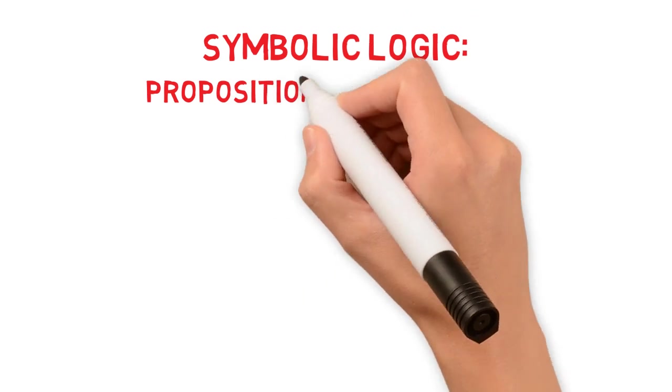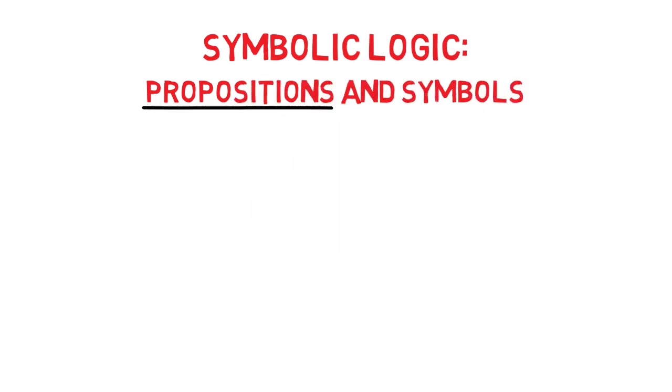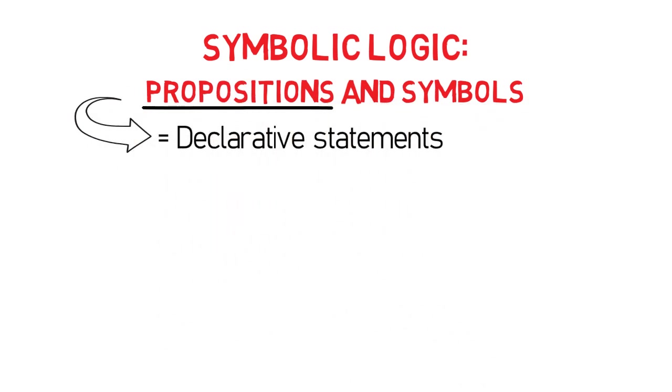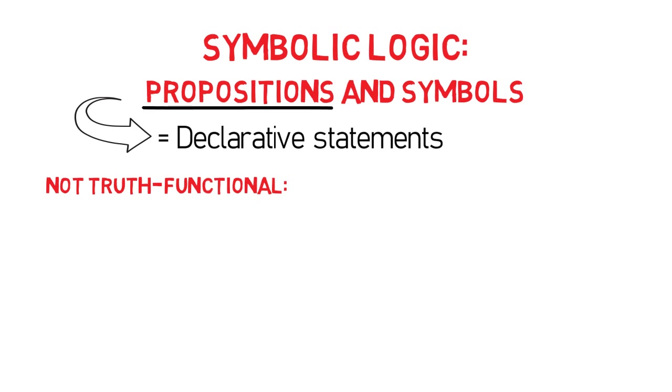But because arguments are composed of propositions and because we need to symbolize the argument first using a specific rule before we can determine its validity, we need, therefore, to discuss the types of propositions and symbols used in symbolic logic. Please note that symbolic logic uses only declarative statements or propositions, because any other types of propositions are not truth-functional — that is, they cannot be either true or false.